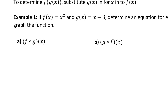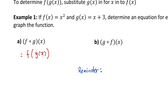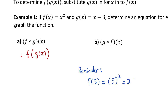For part a, we have to find f composed of g of x, or f of g of x. Before we do that, a quick reminder of how function notation works. If I wanted to know the value of this function when x was 5, I could write f of 5 equals, then replace x with 5, making the function become 5 squared, which is 25. So this just says that the value of function f, when x is 5, is 25.